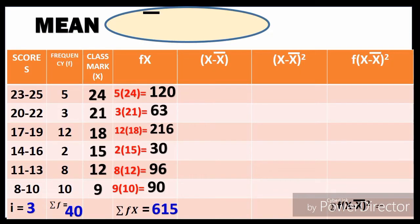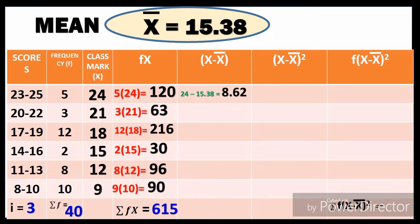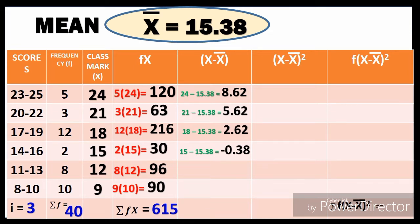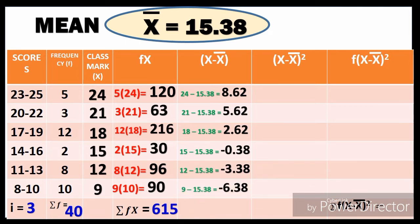Now we use our mean of 15.38 and compute the column X minus x̄. We have: 24 − 15.38 = 8.62, 21 − 15.38 = 5.62, 18 − 15.38 = 2.62, 15 − 15.38 = −0.38, 12 − 15.38 = −3.38, and 9 − 15.38 = −6.38.